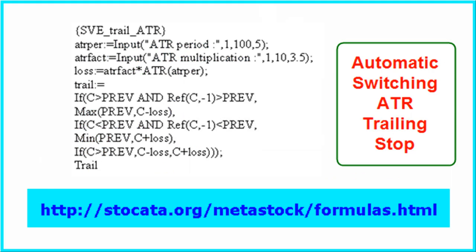Let's first look at the automatic switching ATR trailing stop. With this formula, that you can find at stoccata.org/metastock/formulas.html, you can experiment with the ATR averaging period and which multiplication factor is most appropriate. I am using a 5-day average and a 3.5 multiplication factor.